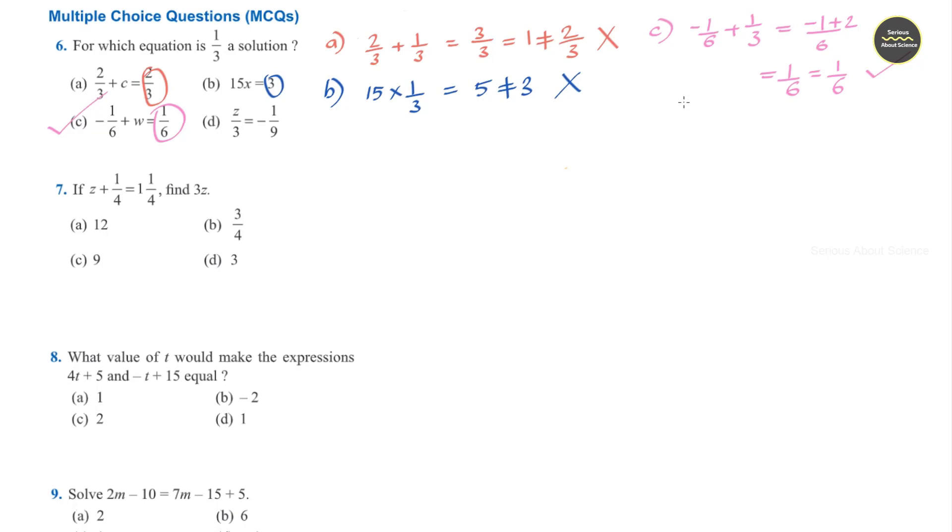Now we can also consider option d. It is z/3. Instead of z I can substitute 1/3 divided by 3 is equal to -1/9. 1/3 divided by 3 is 1/9, and 1/9 is not equal to -1/9. So this is also wrong.